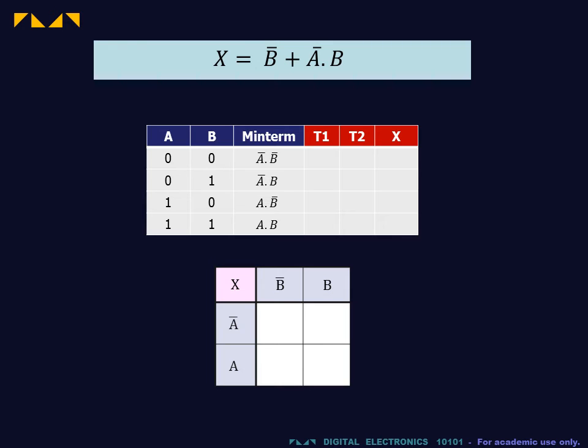With the Karnaugh map, it is better to start with the lowest order terms first, since these will provide the biggest bags. So, for the B bar term, we identify the B bar bag and then place ones in the bag.